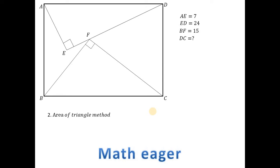Let's do the area of triangle method. Now, the dimension of ED is 24, the dimension of AE is 7, the dimension of BF is 15. Look, this triangle AED is a right-angle triangle, so we can use Pythagoras theorem. Using Pythagoras theorem, we can evaluate the magnitude of AD is 25. Since ABCD is a rectangle, the magnitude of BC is also 25. Triangle BFC is also right-angle triangle, so using Pythagoras theorem, we can find the value of FC is 20.